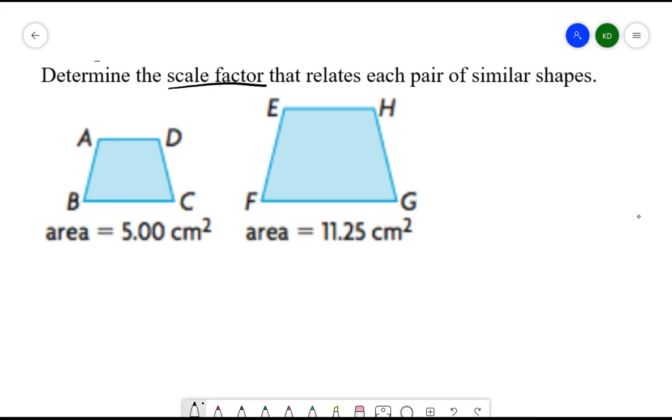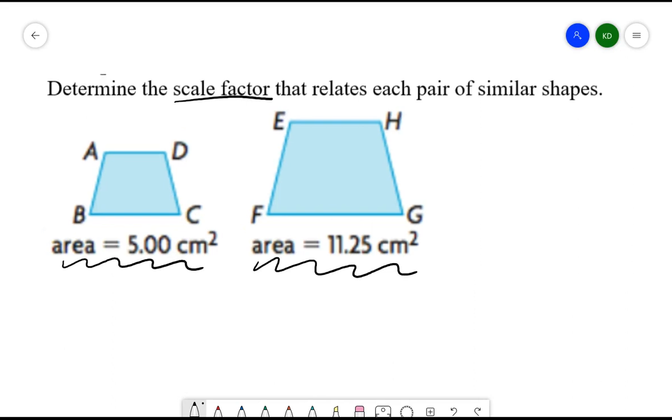So what we have here is the area of this first trapezoid is 5 centimeters squared and the area of the second trapezoid is 11.25 centimeters squared. So how I can compare this, the linear scale factor when I'm looking at what converts side lengths to side lengths, when I square this value what I get is the area scale factor. And I tend to use the letter k to represent the linear scale factor.